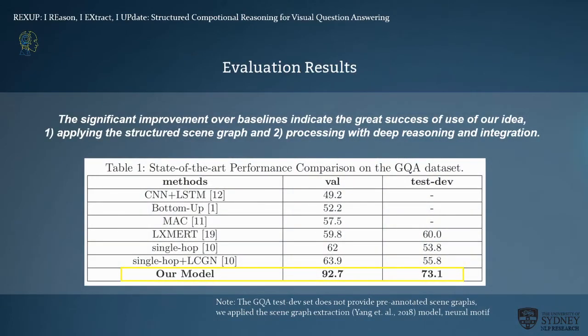To test our model's performance, we compare it to diverse state-of-the-art models on the validation and test dev sets of GQA. The validation set provides pre-annotated scene graphs, but the test dev set does not. For the test dev set, we use a neural motifs model to predict relations between objects and generate scene graphs from images. The quality of generated scene graphs is not as good as pre-annotated ones, leading to lower performance on the test dev set. However, our model still achieved significantly better than state-of-the-art performance — 92% on validation and 73% on test dev set.